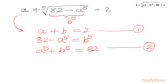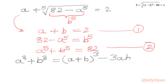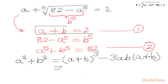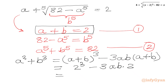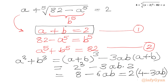Now I will use one algebraic formula: A cubed plus B cubed equals (A plus B) cubed minus 3AB times (A plus B). We calculate A cubed plus B cubed. Since A plus B equals 2 from equation 1, we write 2 cubed minus 3 times AB times 2, which gives 8 minus 6AB, or taking 2 common, 2 times (4 minus 3AB). We will call this equation number 3.